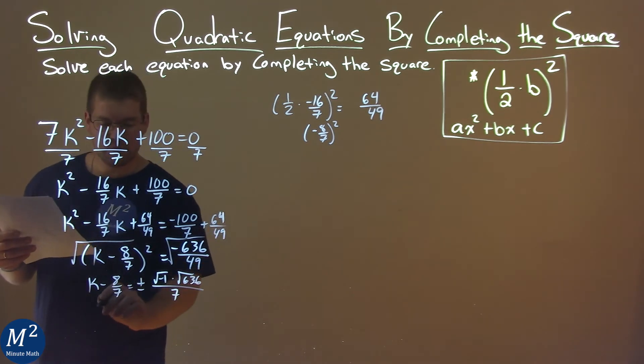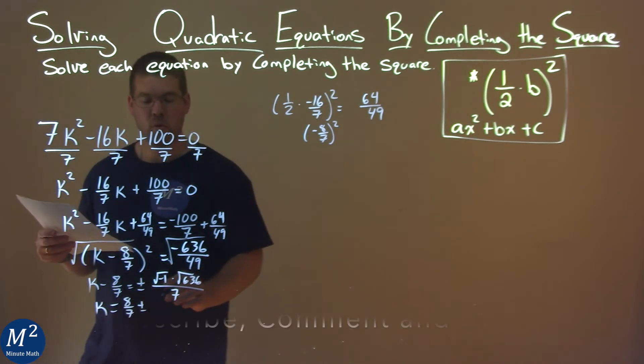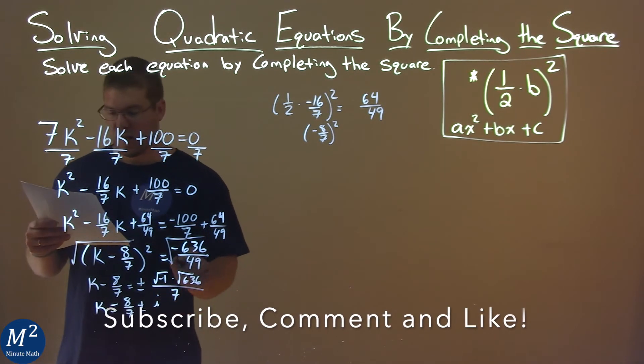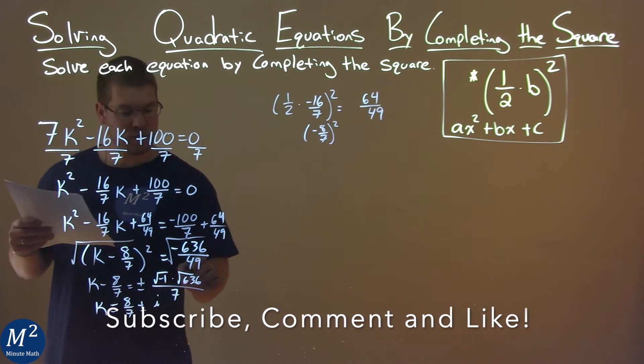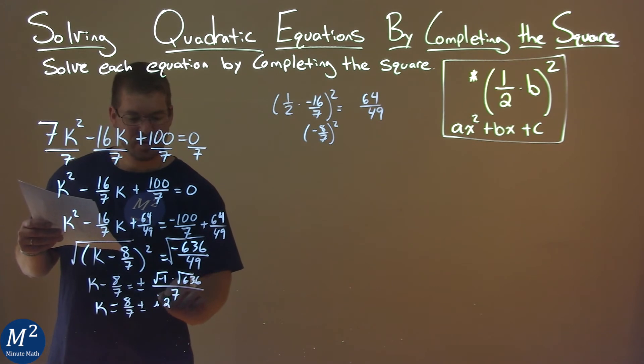We add 8 sevenths to both sides, so we have k equals positive 8 sevenths, plus or minus, square root of negative 1 is an i, and the square root of 636 comes out to be a 2, so that's times 2, square root of 159 over 7.